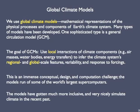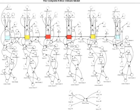First, though, let's work our way through part of a GCM — in this case, the complete six-box climate model. Just kidding! It's sufficient to glance at the figure and appreciate some of the conceptual and programming challenges that have to be addressed. As I tell my students, this is not on the final exam.